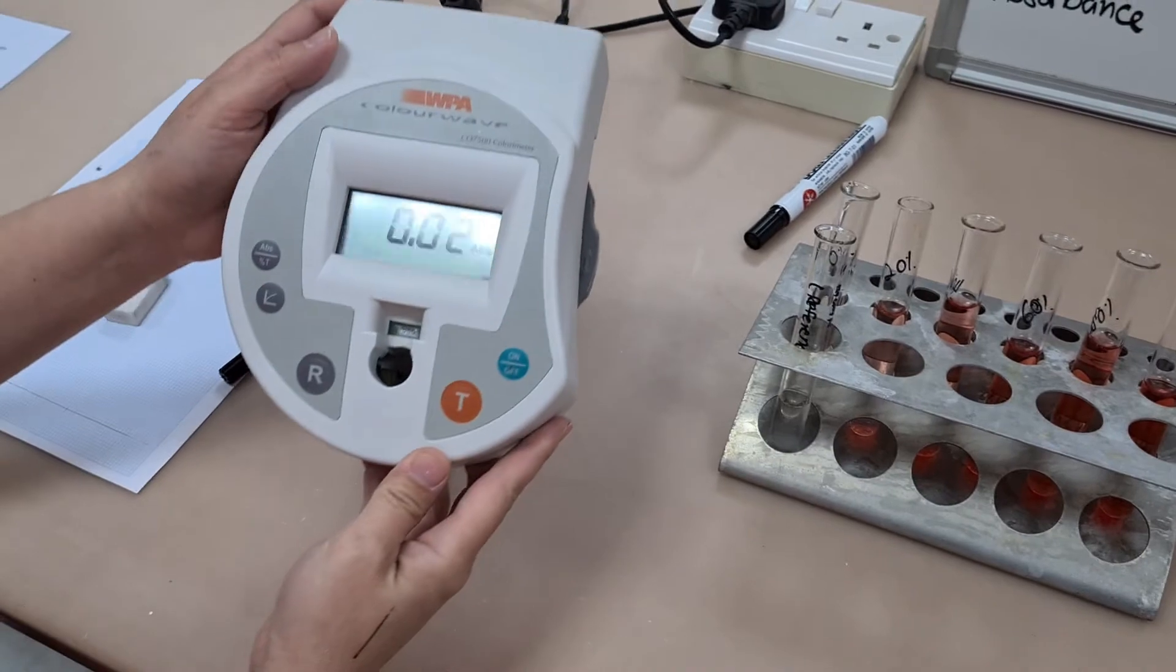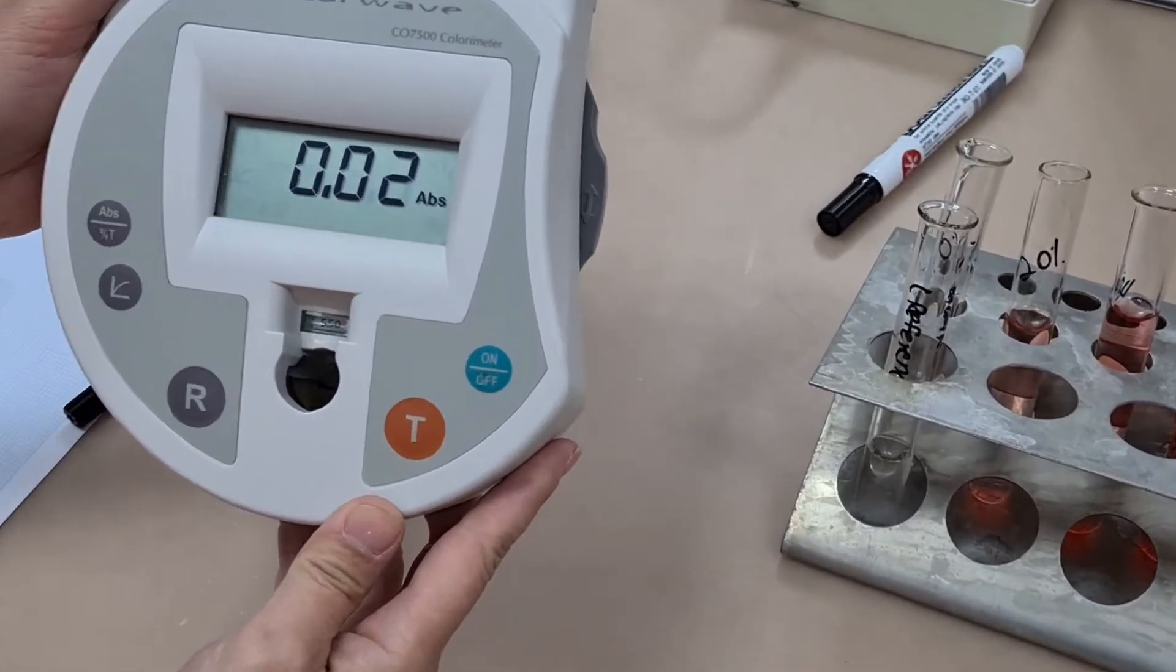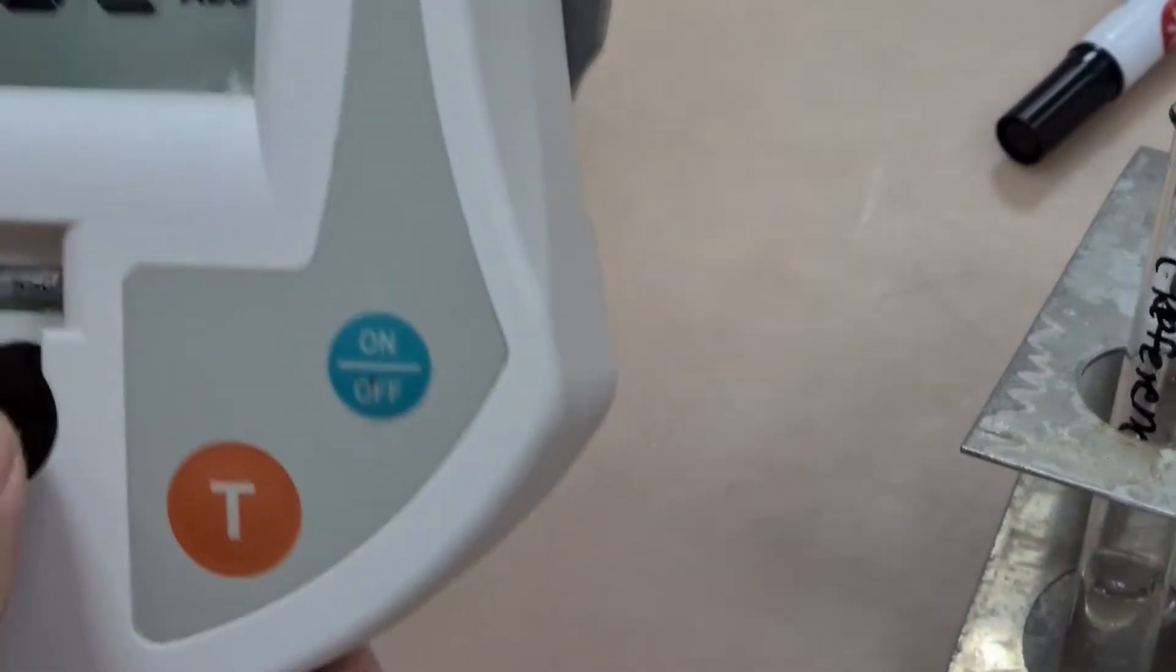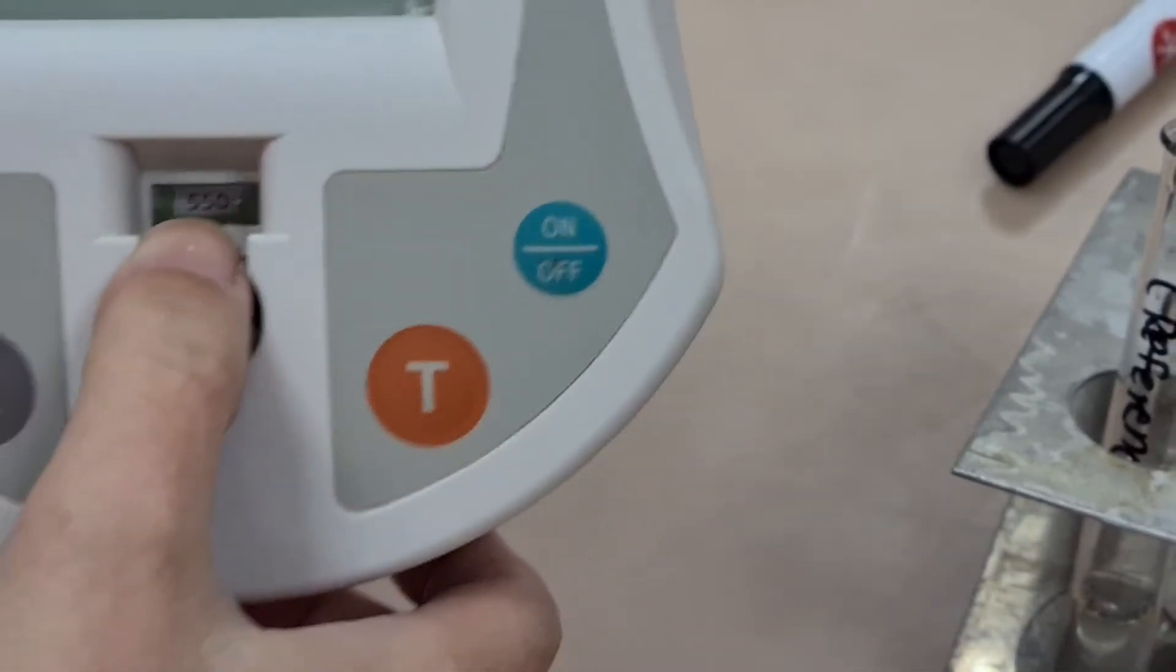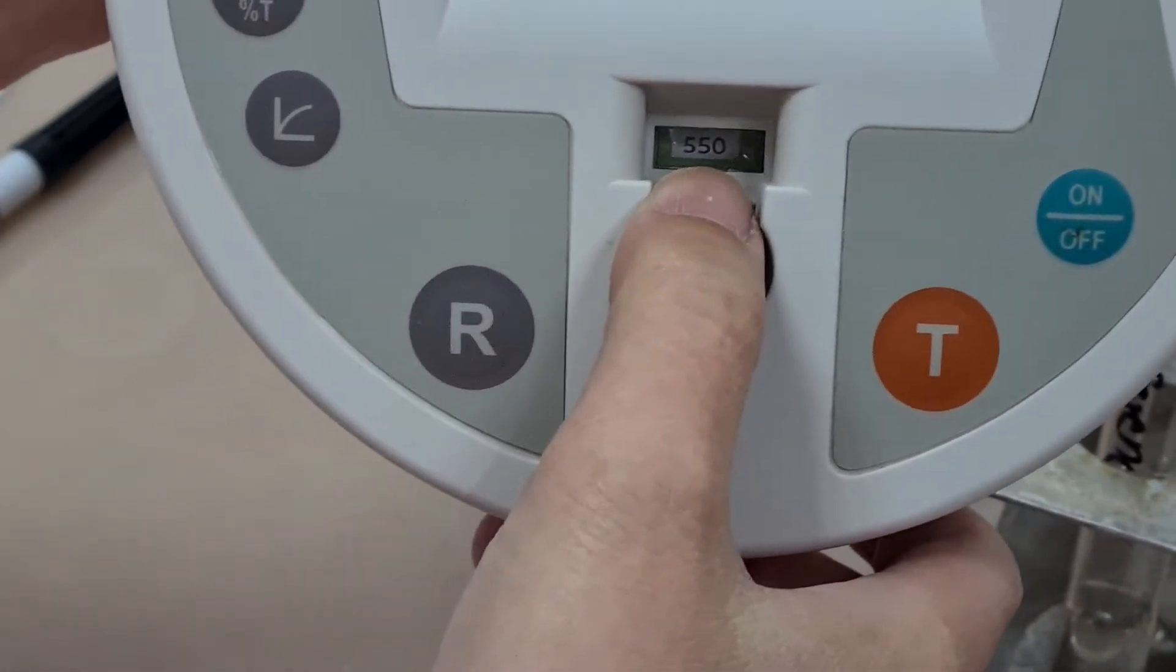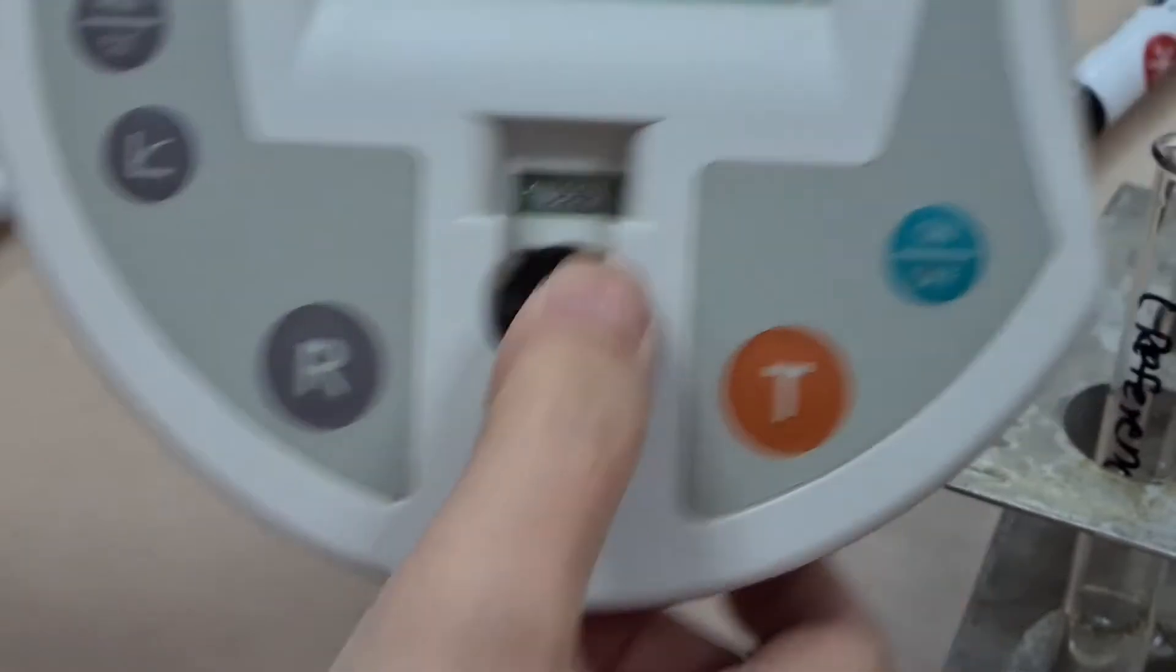Here is the colorimeter and you're going to set it on a wavelength which you can find in the window there. In an experiment you'll get different results depending on the wavelength of light that you choose to shine through your sample.